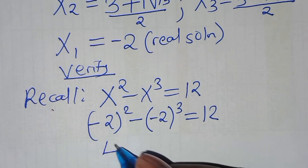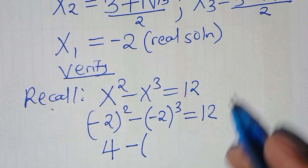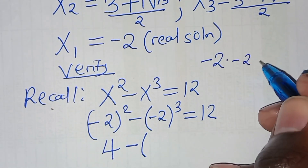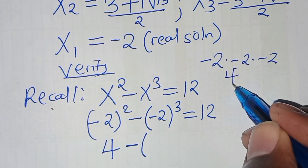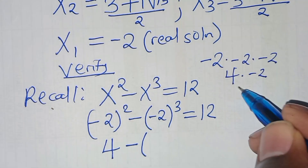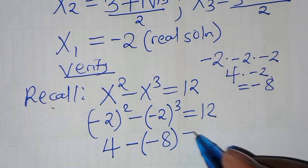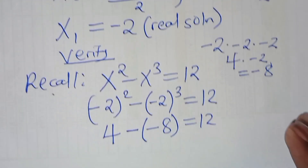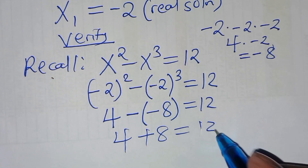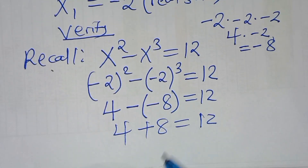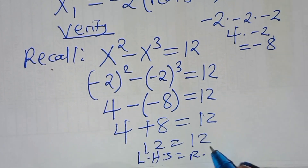Minus 2 squared is 4, subtract minus 2 cubed. Minus 2 cubed is minus 2 times minus 2 times minus 2: minus 2 times minus 2 is 4, times minus 2 is minus 8. So we have 4 subtract minus 8, which is minus times minus giving plus, so 4 plus 8 equals 12. The left hand side is equal to the right hand side, confirming the solution.